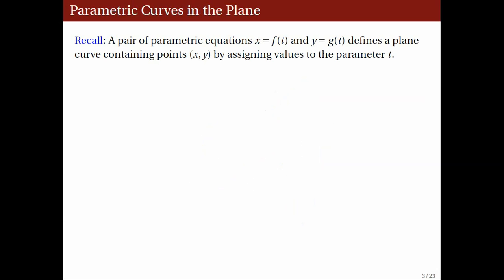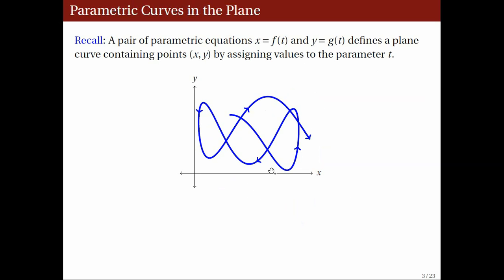First, we recall a concept introduced in the third part of this course. If x and y are given by the functions f and g of the parameter t, then as the value of t increases, the ordered pair x and y also varies, tracing out the curve in the plane. In this diagram, the arrowheads indicate the direction in which the curve is traced.